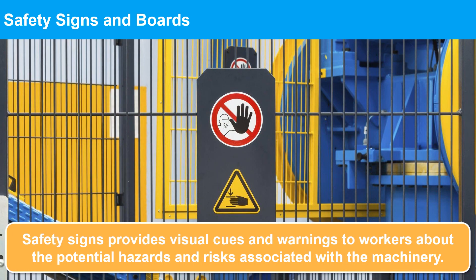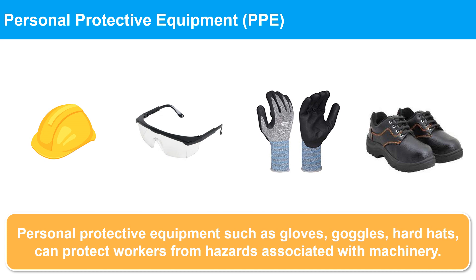Safety signs and boards play a crucial role in machine safety by providing visual cues and warnings to workers about the potential hazards and risks associated with the machinery. By following safety signs and boards, workers can better protect themselves from harm and prevent accidents. Personal protective equipment (PPE), such as gloves, goggles, and hard hats, can protect workers from hazards associated with machinery. However, PPE should not be relied on as the primary method of safeguarding machinery.